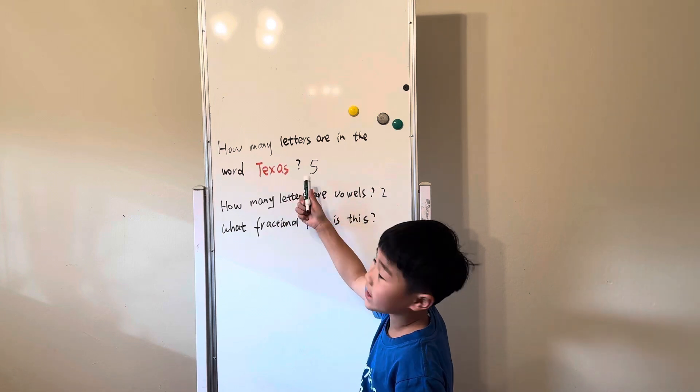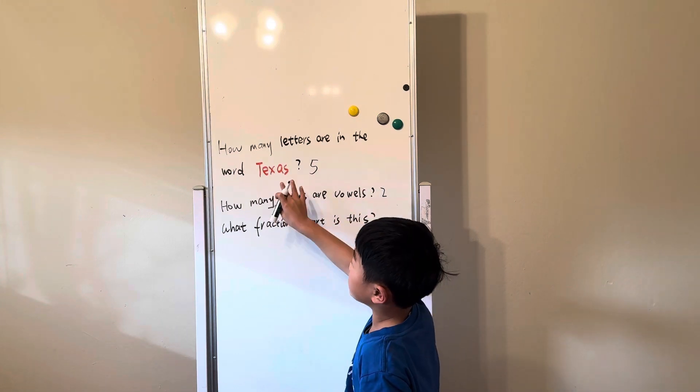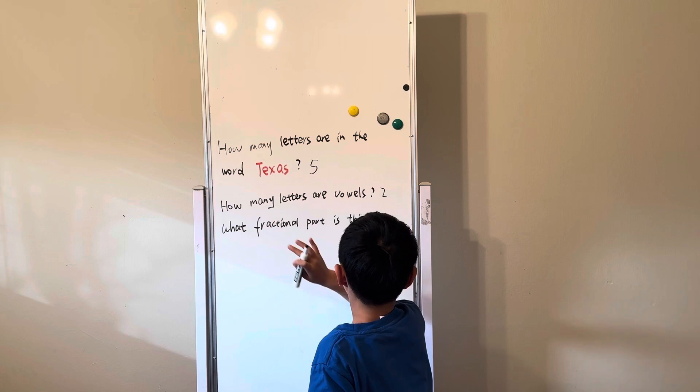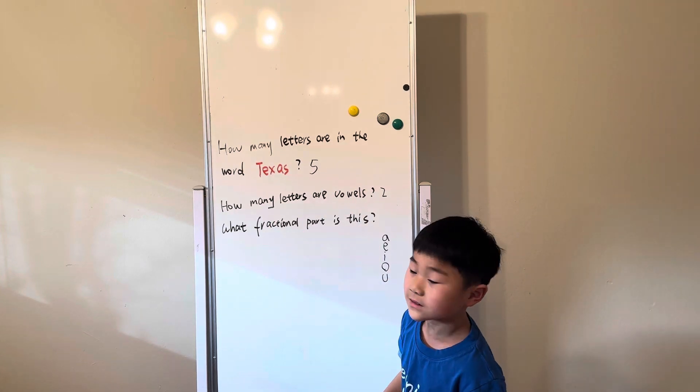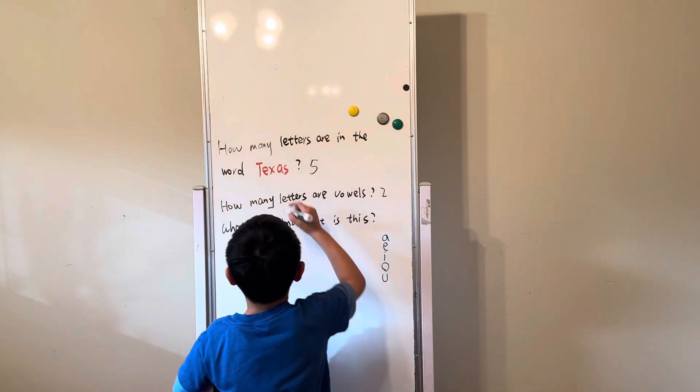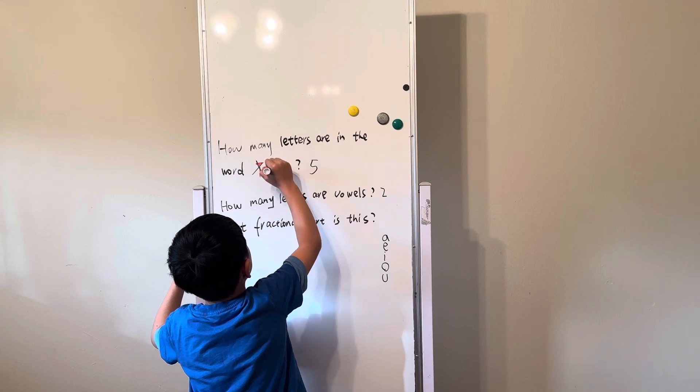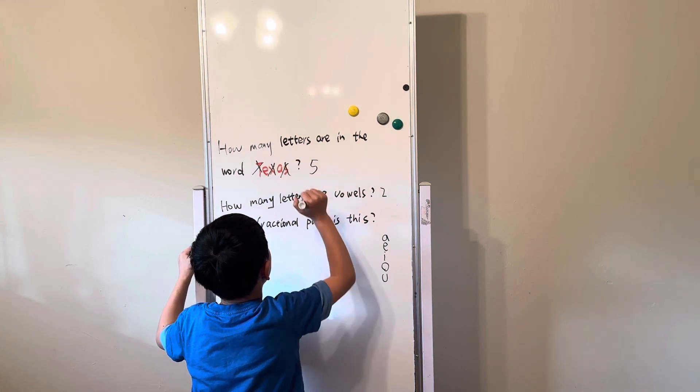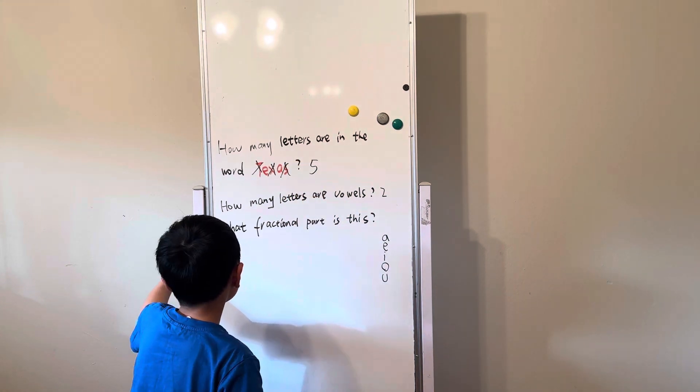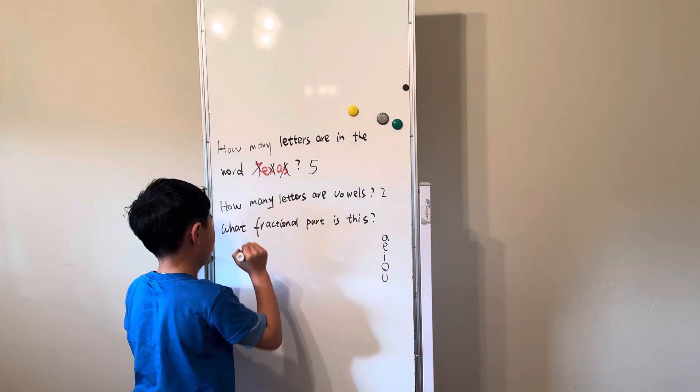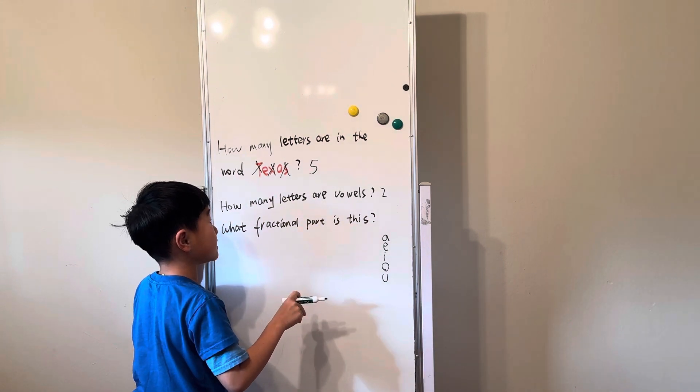Because E and A are vowels, and the others are not vowels. What fractional part is this?